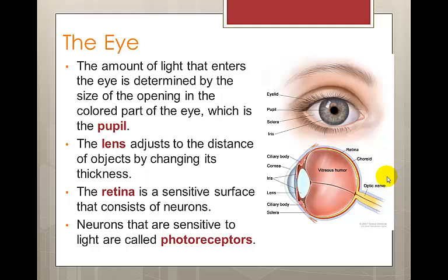Behind the iris, suspended by muscles, is another clear structure called the lens. The flexible lens finishes the focusing process begun by the cornea and can change its shape from thick to thin in a process called visual accommodation, which allows the eye to focus on objects that are close or far away. People lose this ability as the lens hardens through aging.